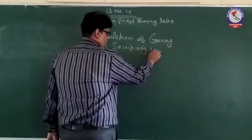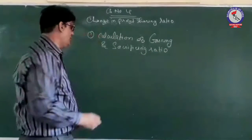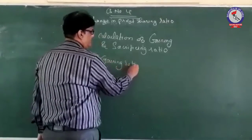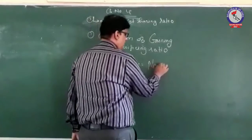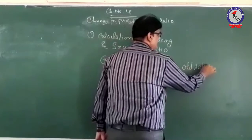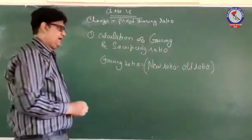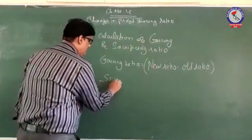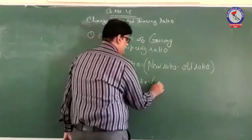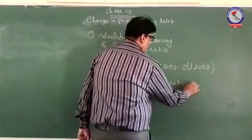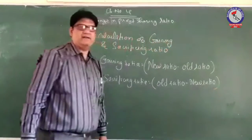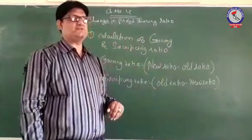When we talk about these two, there are two basic standard formulas. For the gaining ratio, the formula is: Gaining Ratio = New Ratio minus Old Ratio. And for the sacrificing ratio, the formula is: Sacrificing Ratio = Old Ratio minus New Ratio. So with the help of these formulas we can determine the gain or sacrifice.